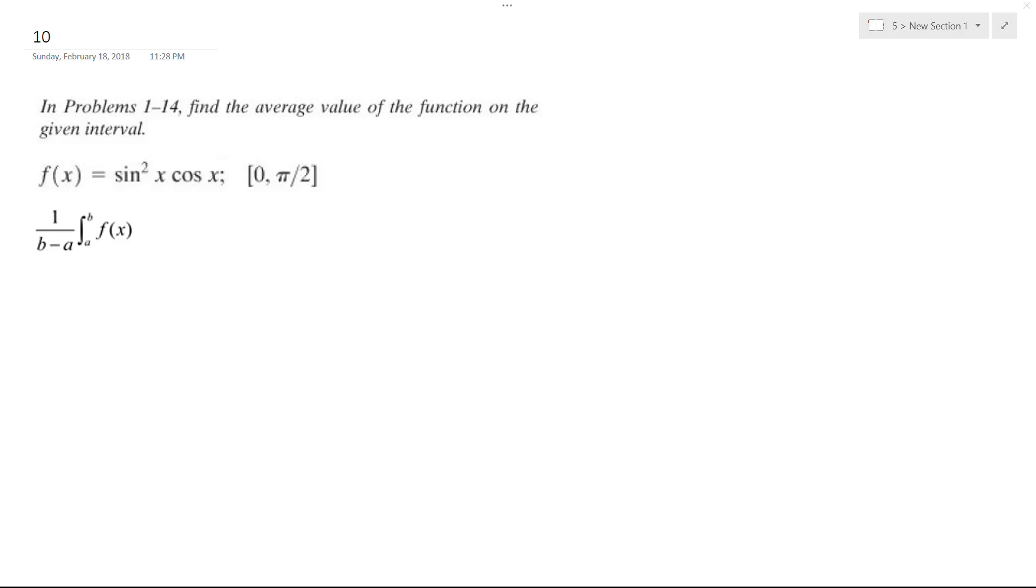So we want to find the average value of the following function. We're going to use this formula right here. So it's going to be 1 over π/2 minus 0, so basically 2 over π.